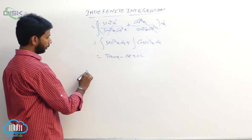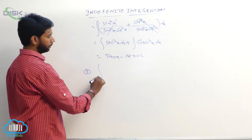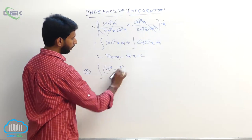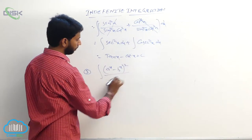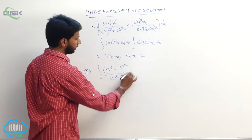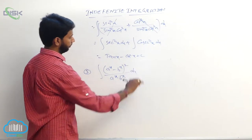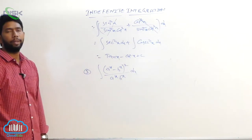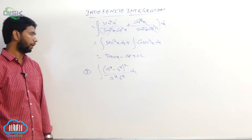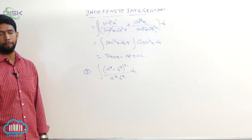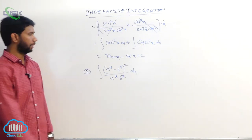Go to the third example: integral of (aˣ - bˣ)² divided by (aˣ bˣ) dx.